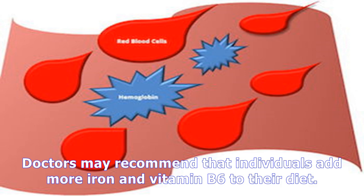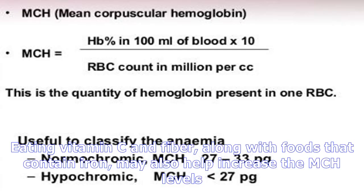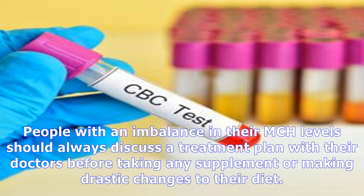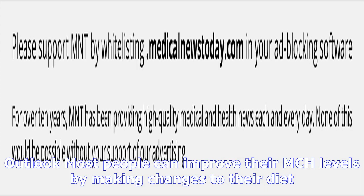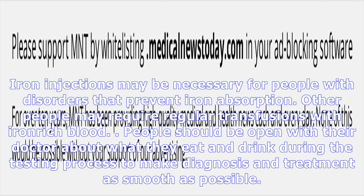Low MCH levels usually occur as a result of iron deficiency that has led to anemia. Doctors may recommend that individuals add more iron and vitamin B6 to their diet. Eating vitamin C and fiber, along with foods that contain iron, may also help increase MCH levels. People with an MCH imbalance should always discuss a treatment plan with their doctors before taking any supplement or making drastic changes to their diet.